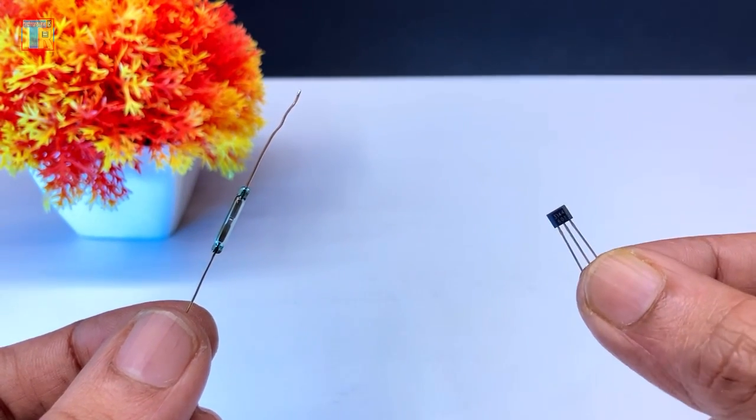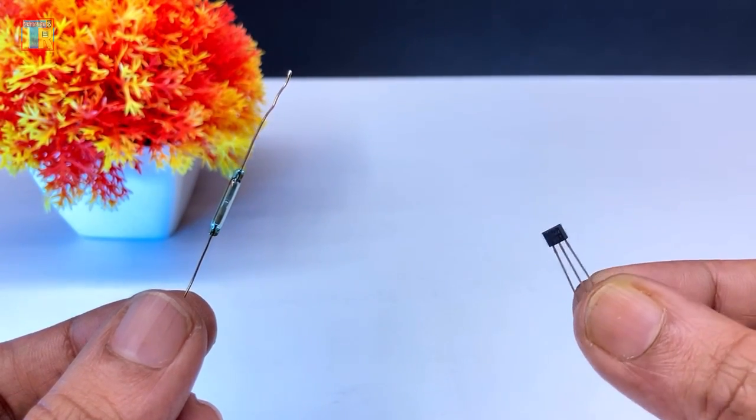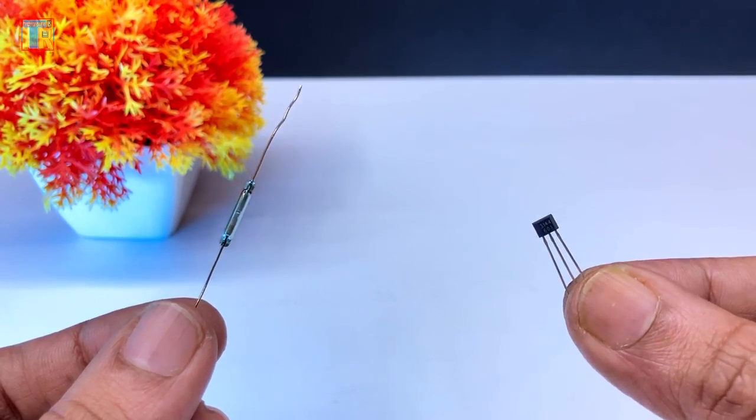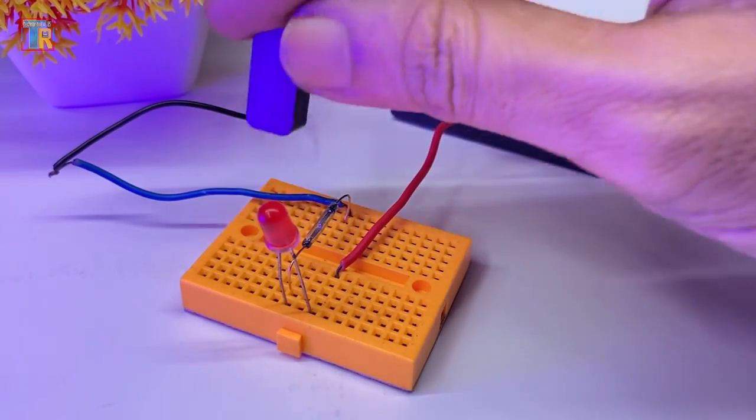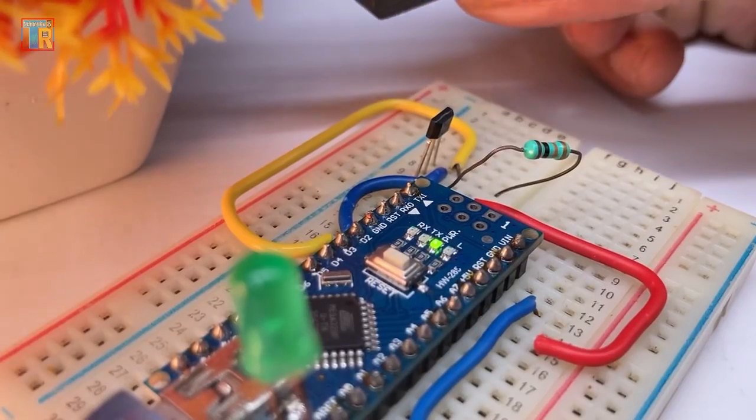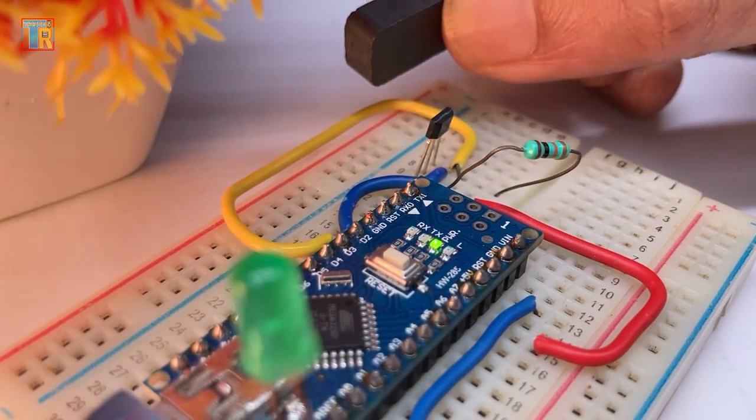Have you ever wondered what the difference is between a reed switch and a hall effect sensor? Both detect magnets but they work in very different ways. In this video I will explain, show you a demo of each and compare where they are used.